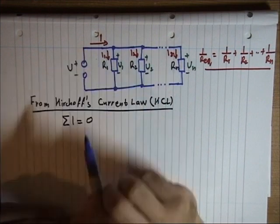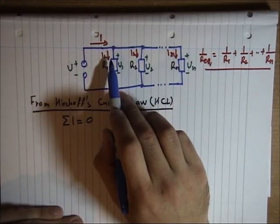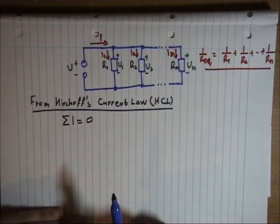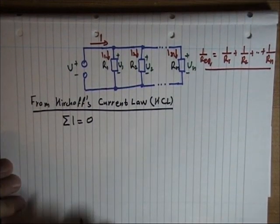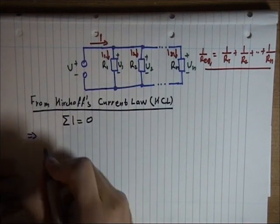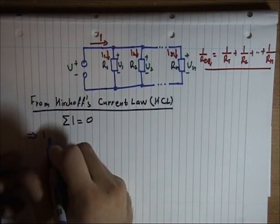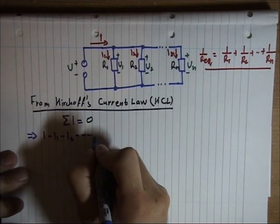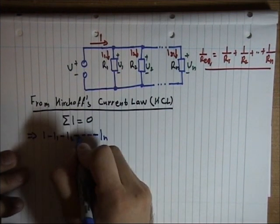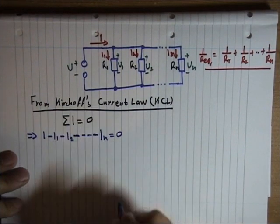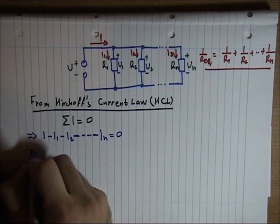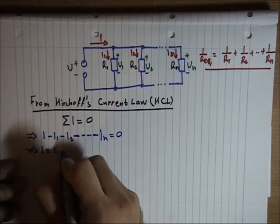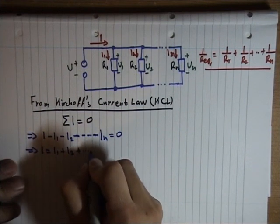So the current from the source is divided into the individual elements' currents. In order to comply with KCL, we know that I minus I1 minus I2 minus In is equal to zero. If we simplify, we see that the current source is equal to the sum of I1 plus I2 plus In.